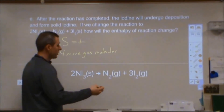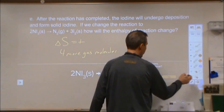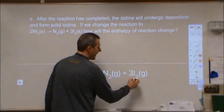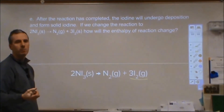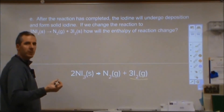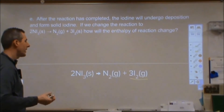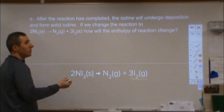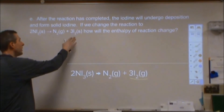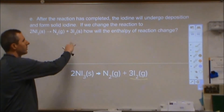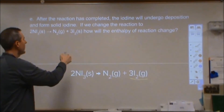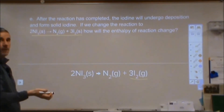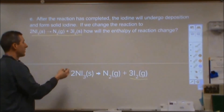Part E asks about a scenario where the iodine produced is initially formed as a gas due to the exothermic nature of the violent reaction, but eventually undergoes deposition to form a solid. The question is: how will the enthalpy of the reaction change if we wrote the reaction with solid iodine forming instead of gaseous iodine?